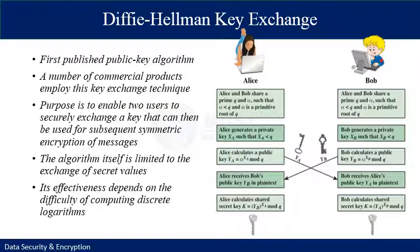The first algorithm in discussion is the Diffie-Hellman key exchange. As the name suggests, this algorithm is used for exchanging keys between two or more users. It was the first published public key algorithm and a number of commercial products employ this key exchange technique. The purpose is to enable two users to securely exchange a key that can then be used for further symmetric encryption of messages. The algorithm is limited to the exchange of secret values only, and its effectiveness depends on the difficulty of computing discrete logarithms.